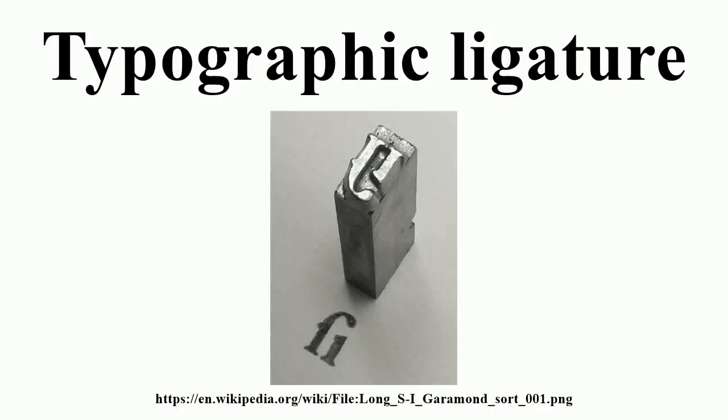In writing and typography, a ligature occurs where two or more graphemes or letters are joined as a single glyph. An example is the character Æ as used in English, in which the letters A and E are adjoined. The common ampersand developed from a ligature in which the handwritten Latin letters E and T were combined.